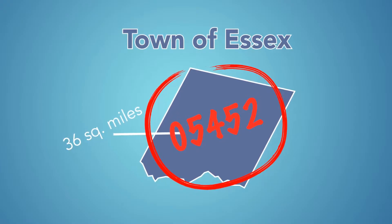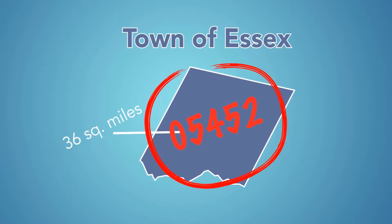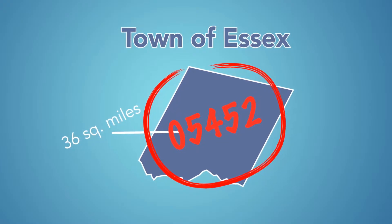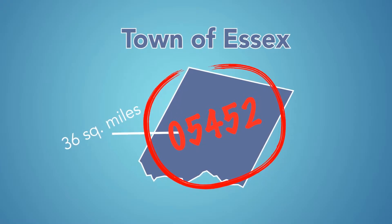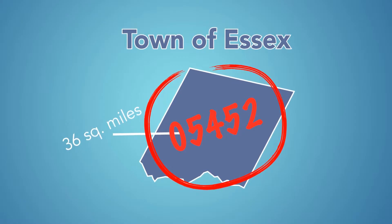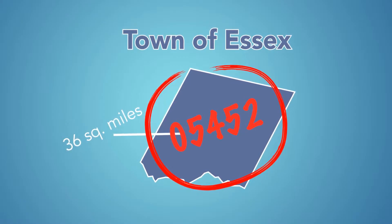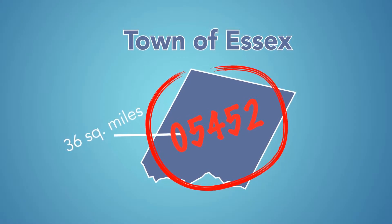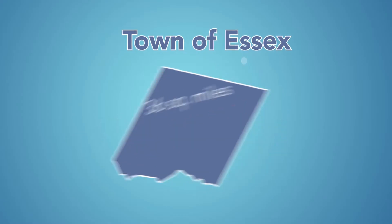It is not uncommon for someone to say, look at my address, I live in Essex Junction. But this is simply the postal designation — it has no bearing on the municipal boundaries, taxation, or residency status.